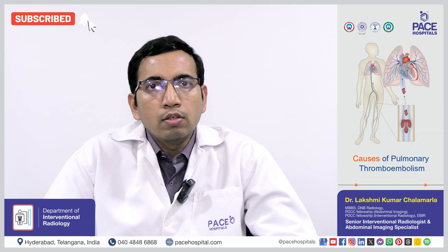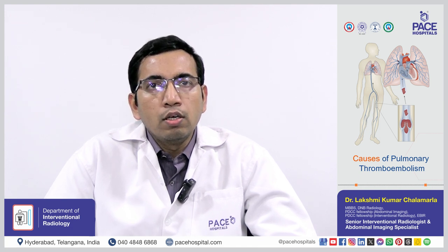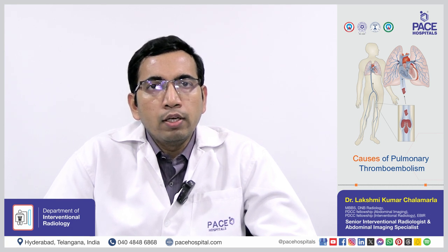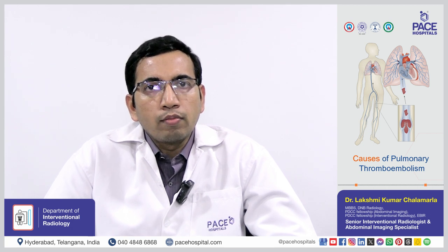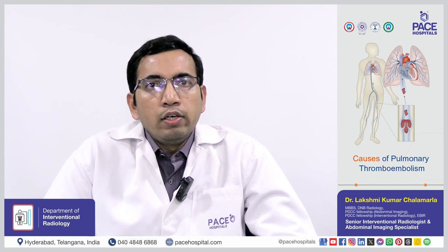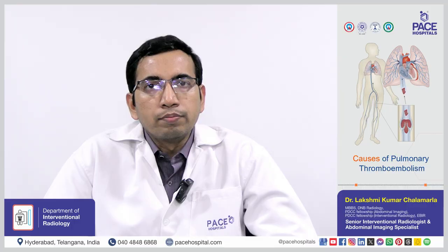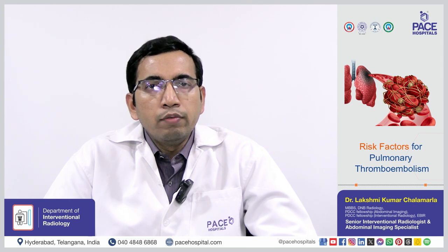The primary cause is usually deep vein thrombosis in the legs. The deep veins are situated deeper to the skin in the lower limbs. If a blood clot forms there, it may break off and travel through the lower limb veins, then through the right heart, and then reach the lung arteries.